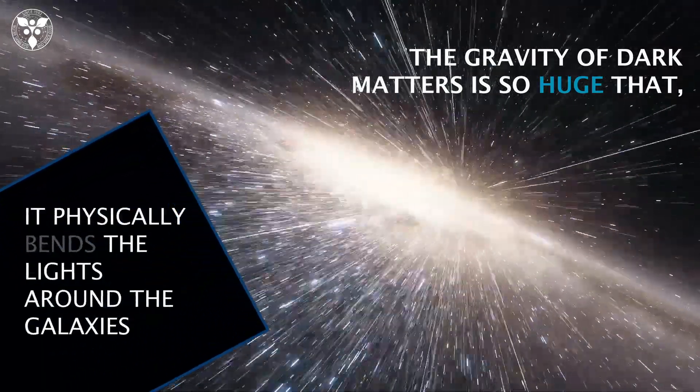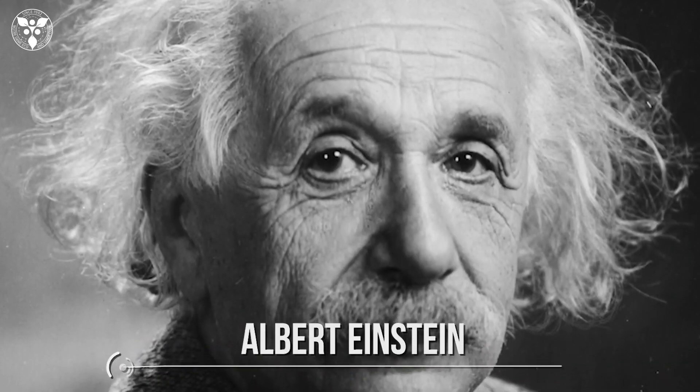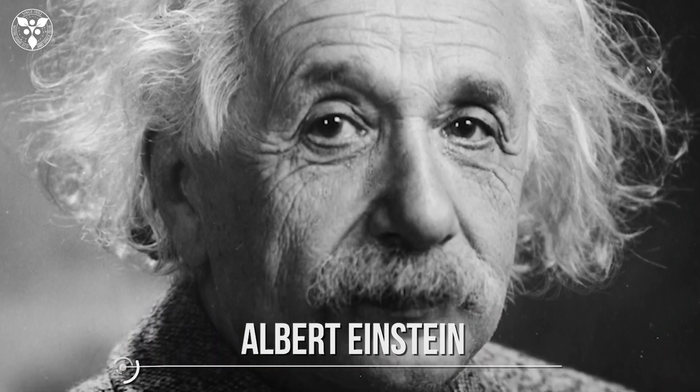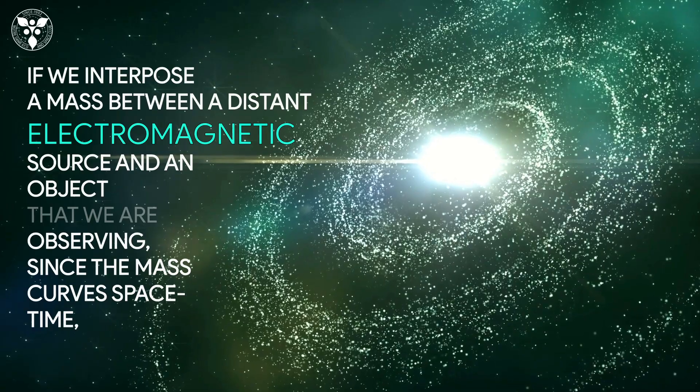The gravity of dark matter is so huge that it physically bends the light around galaxies. According to Einstein's general relativity, if we interpose a mass between a distant electromagnetic source and an object that we are observing, the mass curves space-time.